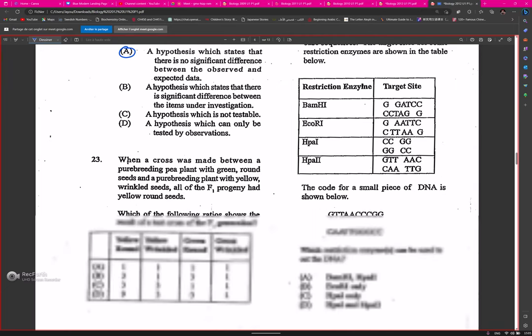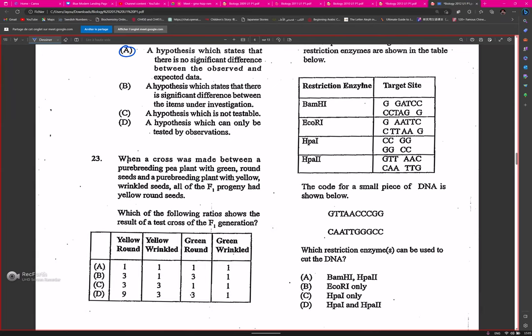When a cross was made between a pure breeding pea plant with green round seeds and a pure breeding plant with yellow wrinkled seeds, all of the first filial progeny had yellow round seeds. Which of the following ratios shows the result of a test cross of the first generation? It should be the Mendelian ratio, beautiful.